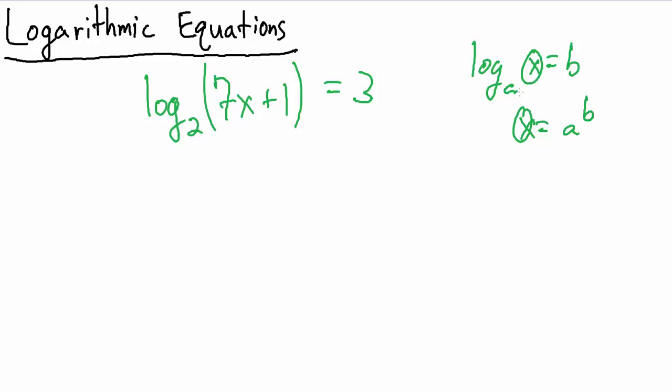So the thing inside of the log equals the base raised to this thing on the other side. So in our case, that's going to be written as 7x plus 1, the thing inside of the log, equals the base, base 2, raised to the third power.